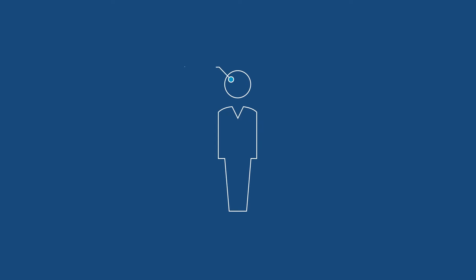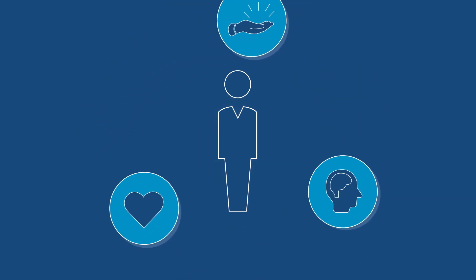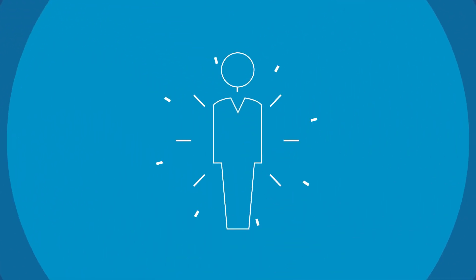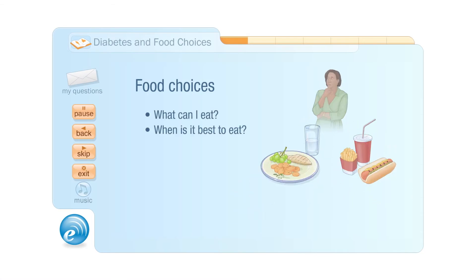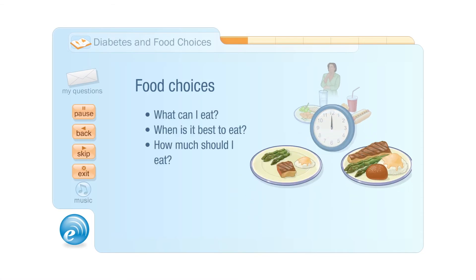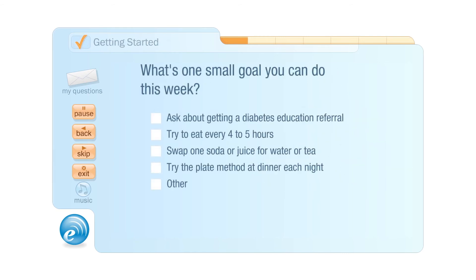Developed with an empathetic approach, EMI programs help people understand what they need to do and why they need to do it, while providing the tools and inspiring the confidence they need to take action. I know making food choices can be confusing, but you don't have to tackle everything at once. Let's start small. What's one small goal you can do this week?